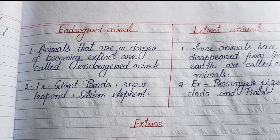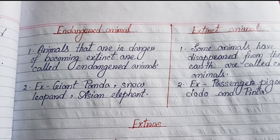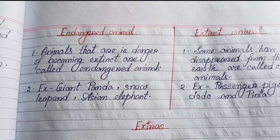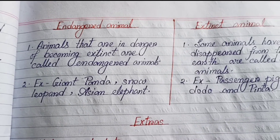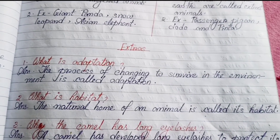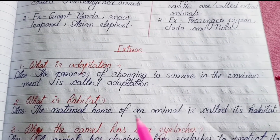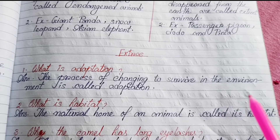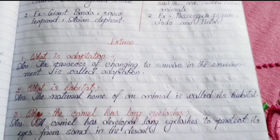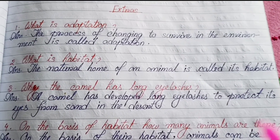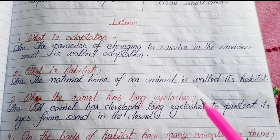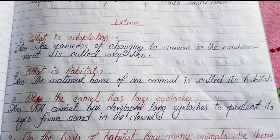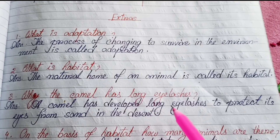Now we will solve some inside question answers from the chapter. Number one — What is adaptation? The process of changing to survive in the environment is called adaptation. Number two — What is habitat? The natural home of an animal is called its habitat. Number three — Why does a camel have long eyelashes? A camel has developed long eyelashes to protect its eyes from sand in the desert.